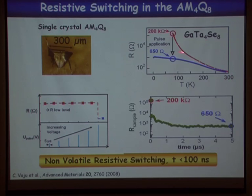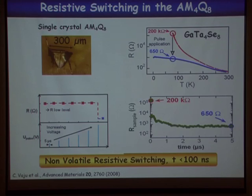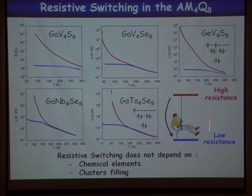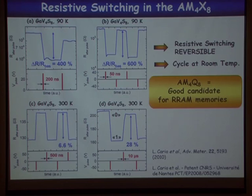This resistive switching behavior is observed in the whole family of Mott insulator compounds. Looking at two examples with no common elements, the chemistry is not involved, and their electron fillings per cluster differ (8 vs. 7 electrons), so filling is not the driver. We can also do the reverse: reversible resistive switching by applying further pulses, either of the same or opposite polarity. The effect is large at low temperature and still observable at room temperature.